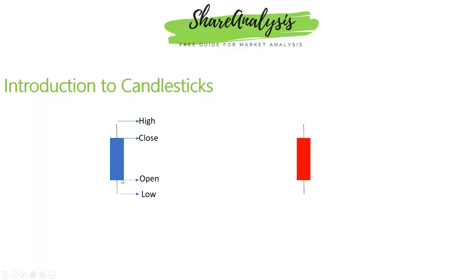The red candle is the bear candle. Looking at the open and close: this is a one-day candle. In the morning, 9:15 is the market open — this is the opening level. In the evening, 3:30 is the market close. The price moves between open and close. The candle also has wicks, shadow, and tail, which symbolize the high and low of the trading day.